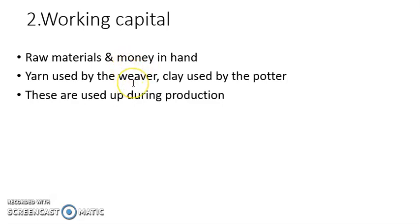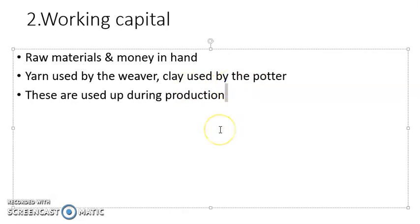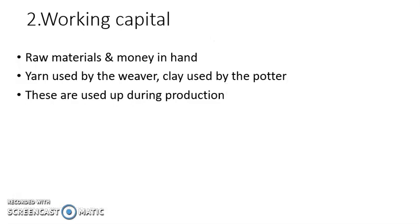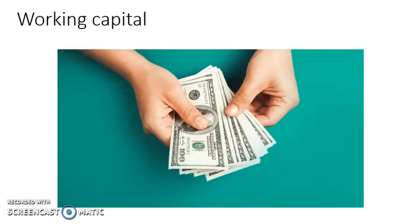For example, yarn used by a weaver is a raw material, and clay is another raw material used by a potter. After one round of production, yarn or clay is used up. These raw materials are used up during production, so they are known as working capital. Unlike fixed capital, working capital cannot be used again and again — once it is used, it exhausts during production.